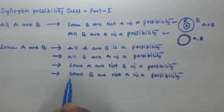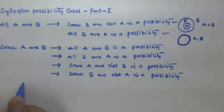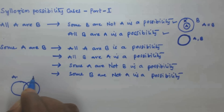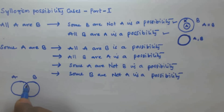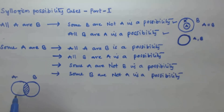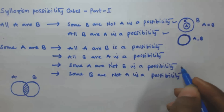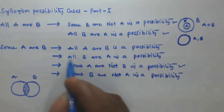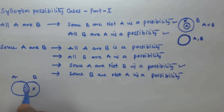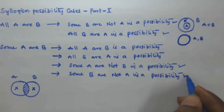To explain with Venn diagrams: for 'Some A are B', draw A and B as overlapping circles. The part of A outside B represents 'some A are not B' — that is a possibility. Likewise, the part of B outside A represents 'some B are not A' — that is also a possibility we can derive from the given statement.